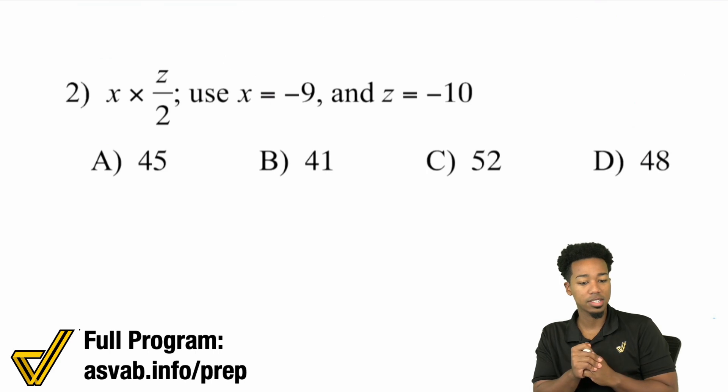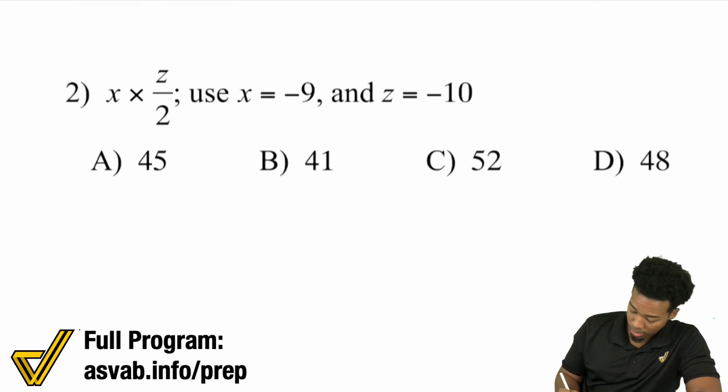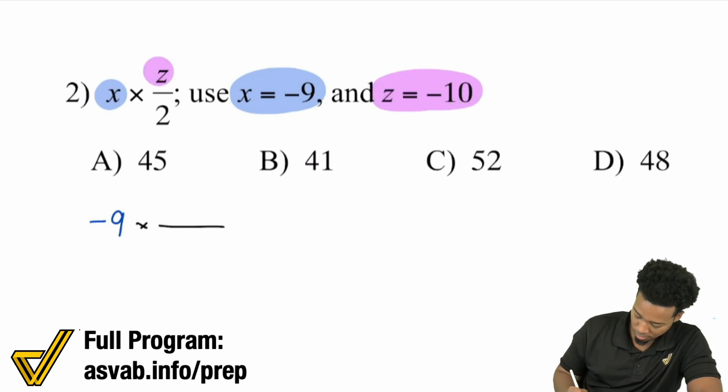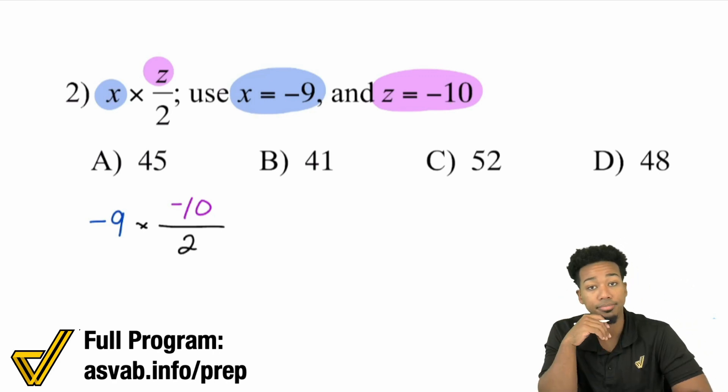Let's say we have x times z over 2. All we're doing is, x is -9, there's x right there. -9 times, then we have z over 2. z is -10, so plug that right in: -10 over 2. Booyah! That's it. And that is it.